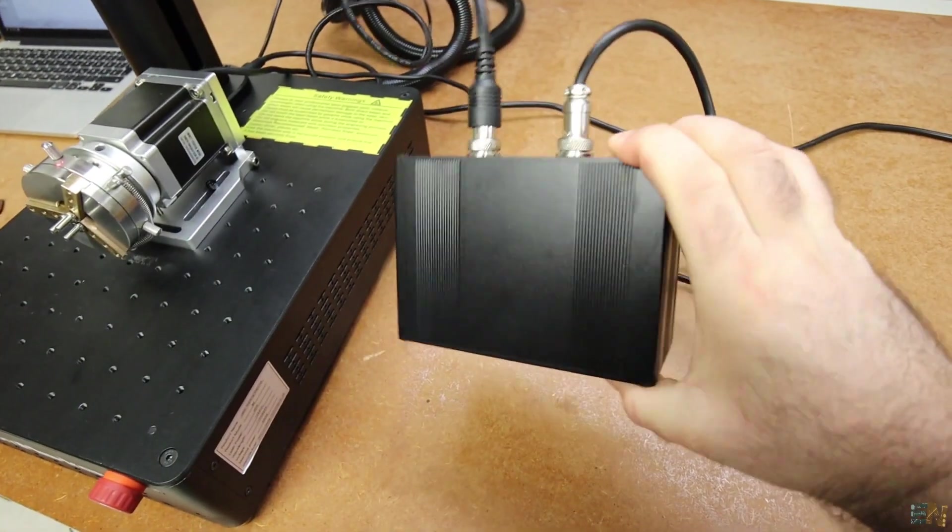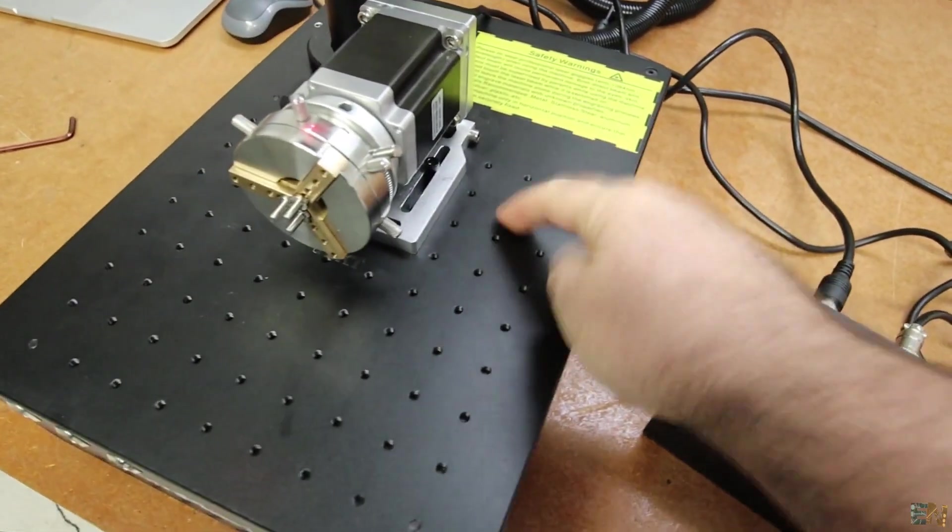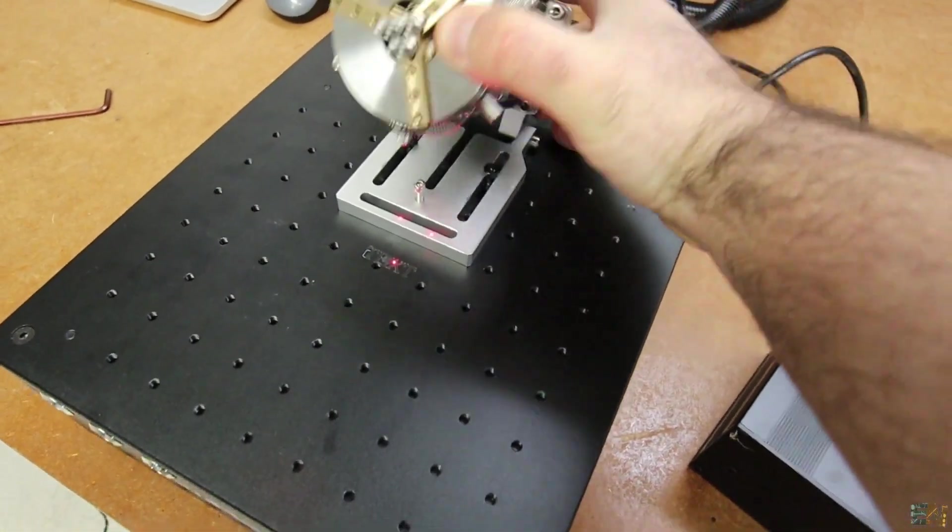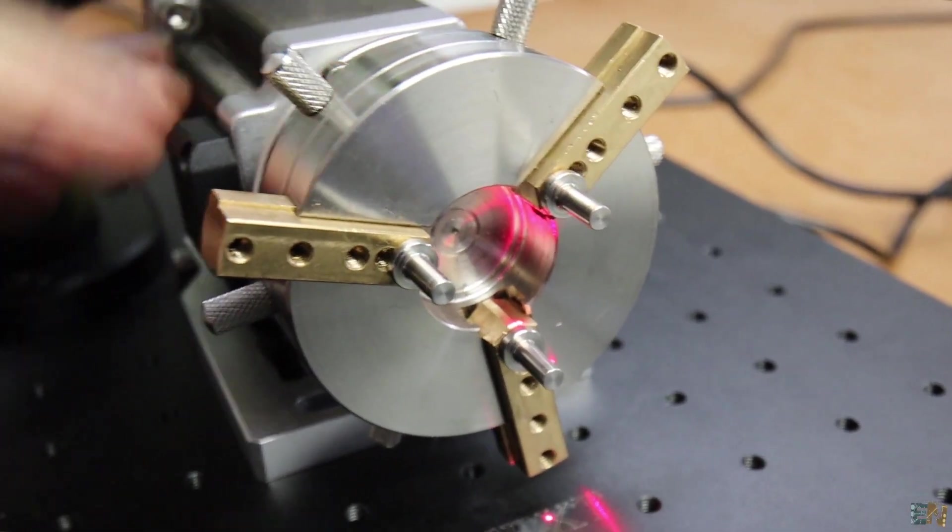Another cool feature is the rotary attachment. Connect the controller to the back of the machine and screw it in place on the base like this. You can use this to engrave on rings for example.